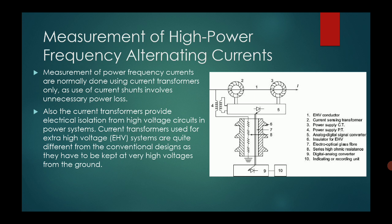Now we discuss measurement of high power frequency alternating currents. The schematic diagram is shown on the right-hand side. Measurement of power frequency currents is normally done using current transformers only, as use of a current shunt involves unnecessary power loss. Current transformers also provide electrical isolation from high voltage circuits. In power systems, current transformers used for extra high voltage (EHV) systems are quite different from the conventional design, as they have to be kept at a very high voltage from ground.